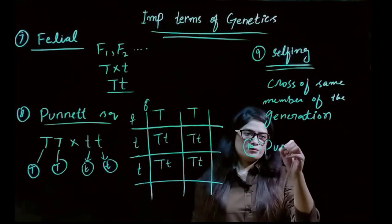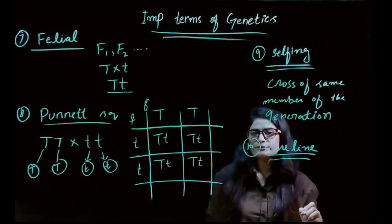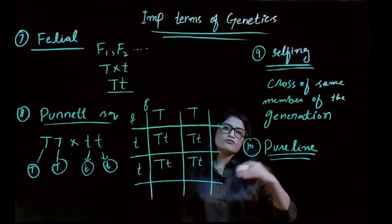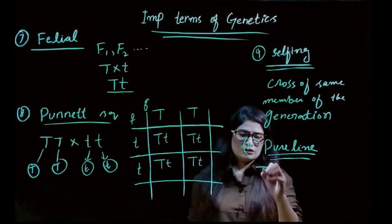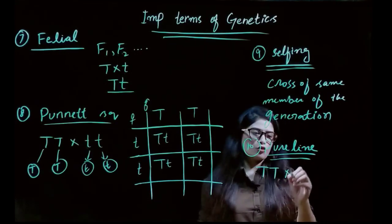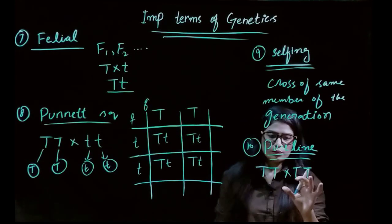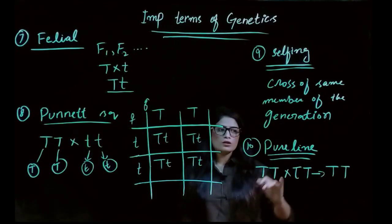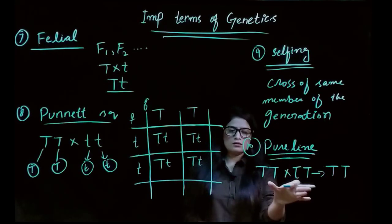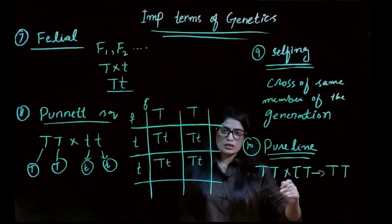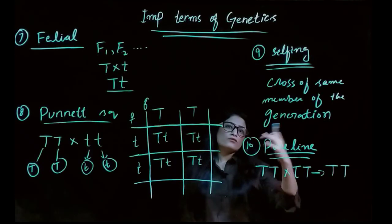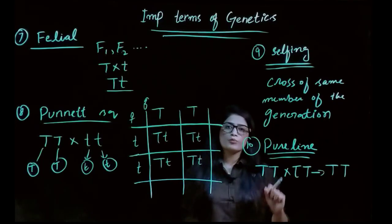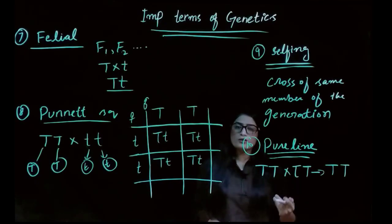The next term is pure line. A pure line is a particular genotype being selfed for more than five generations. For example, a dominant tall plant crossed with another dominant tall plant gives a tall homozygous dominant plant. This process is repeated for more than five generations because we only want that one same genotype — that is what we call a pure line.